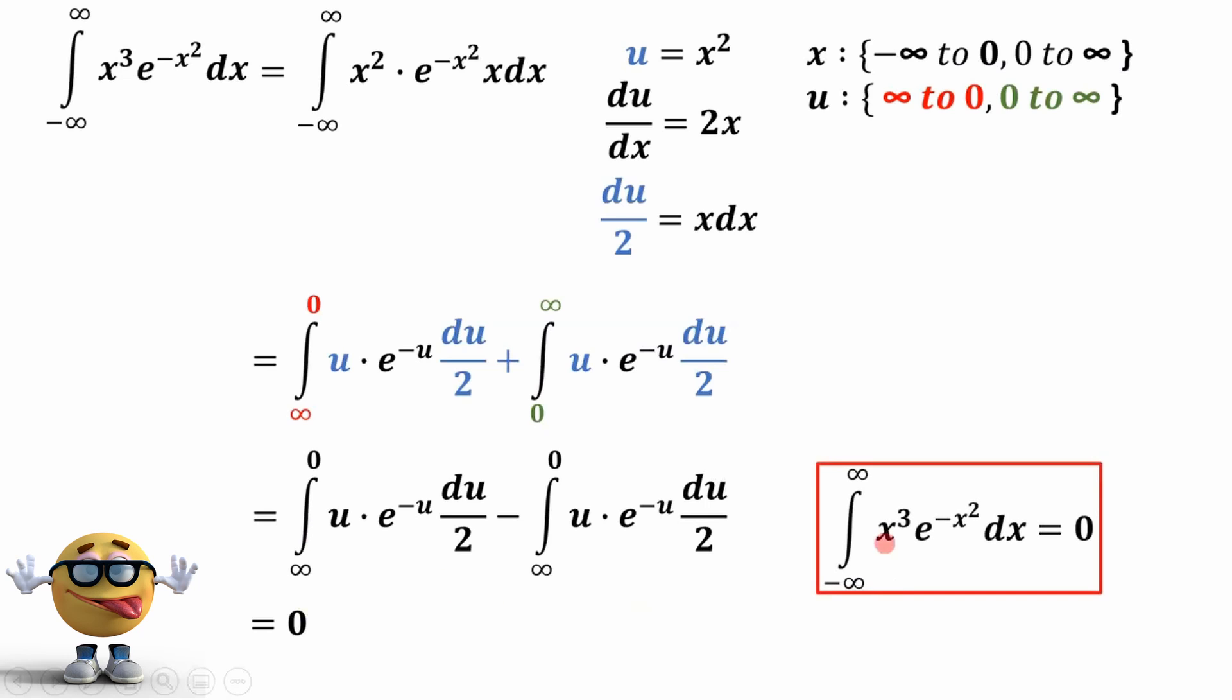So this is an odd function. This is a symmetric integral. And the integral of x cubed times e to the negative x squared from negative infinity to infinity is 0.